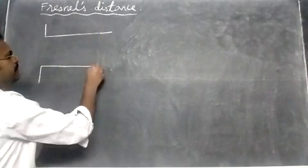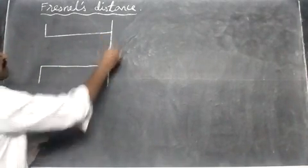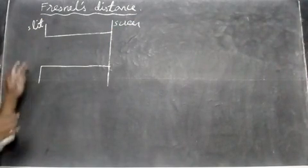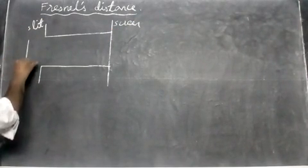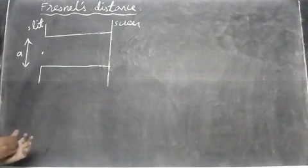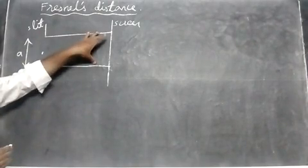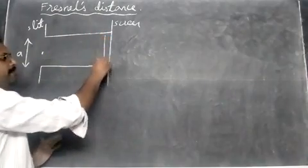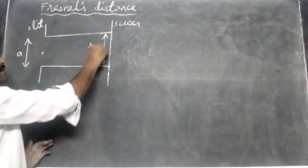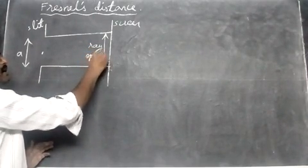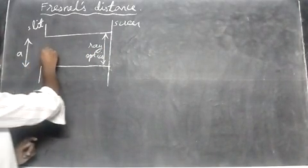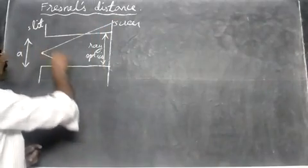Light hits a screen here. This is the screen and this is the slit. The width of the slit is A. Let's take the midpoint here. In ray optics, light goes in straight lines — that works in this region. But light will also bend at this point; it bends upwards and slightly bends down.